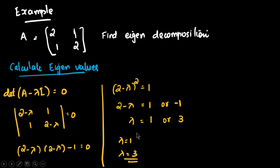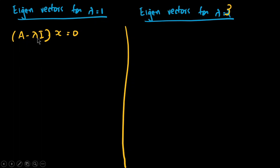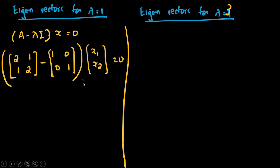We now find the eigenvectors corresponding to eigenvalues 1 and 3. We use the equation (A − λI)x = 0, where x is the eigenvector, A is the transformation matrix, and lambda is the eigenvalue. Since it is a 2×2 matrix, we use x1 and x2 to represent the eigenvector components.